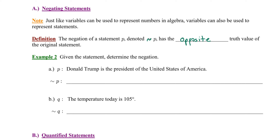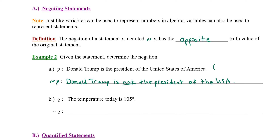For example, given the statement, determine the negation. We use the variable P to represent the statement: Donald Trump is the president of the United States of America. At the time of the recording of this video, that is a true statement. To form not P — represented in symbolic form as squiggle P — we could simply say: Donald Trump is not the president of the USA. Whereas the first statement is true, the negation is false. We simply negated the statement by inserting the word 'not.' Simple as that.